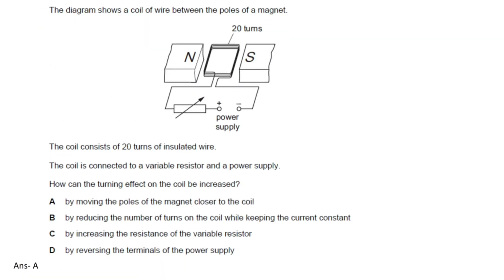The next question: the diagram shows a coil of wire between the poles of a magnet. The coil consists of 20 turns of insulated wire. The coil is connected to a variable resistor and a power supply. The question is: how can the turning effect on the coil be increased?